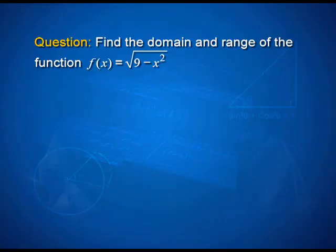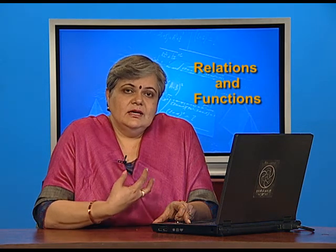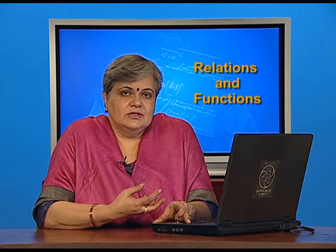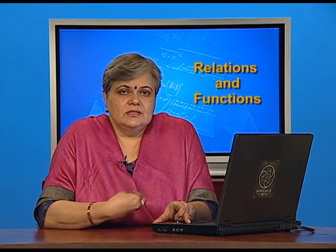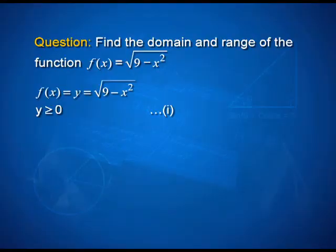Now, how about the range? The range can be calculated by starting with y = √(9 − x²). The square root function is always a positive quantity — its outputs are defined to be always positive values, so that the correspondence remains a function. For example, root of 25 is not plus and minus 5, but only positive 5 by definition. With that in mind, the very first condition on y is that y is greater than or equal to 0.